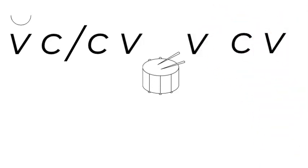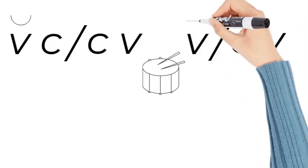There's two syllable patterns: vowel, consonant, consonant, vowel. And we usually break it up between the consonants. And the other syllable pattern is vowel, consonant, vowel. And we break it up after the vowel.